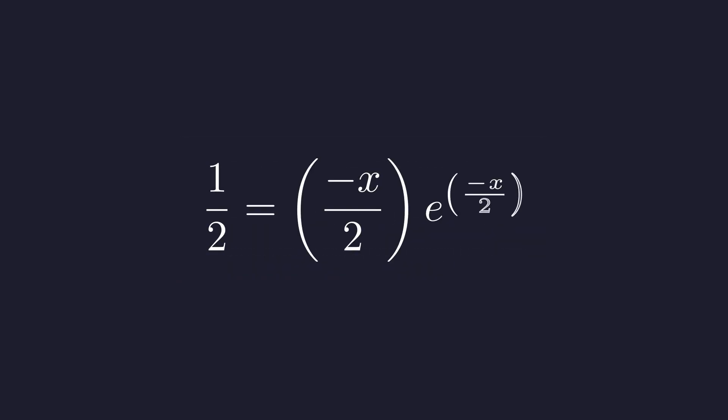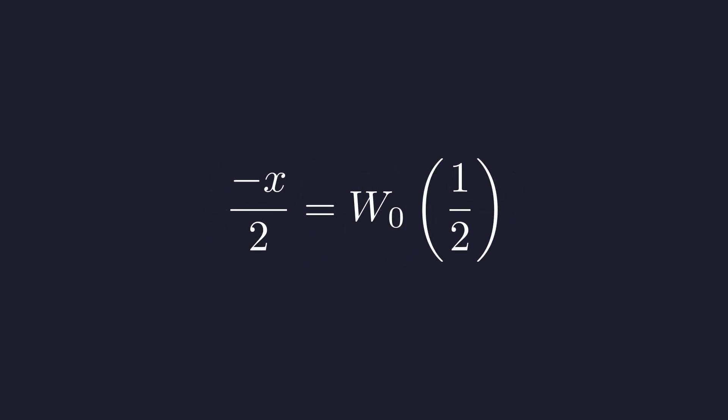Our equation fits this pattern perfectly. Here, u is negative x over 2, and z is 1 half. Applying the Lambert W function to both sides isolates u. We get negative x over 2 equals W sub 0 of 1 half. Multiply both sides by negative 2 to solve for x. And there's our exact answer.